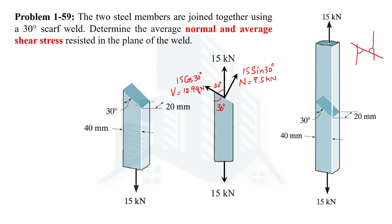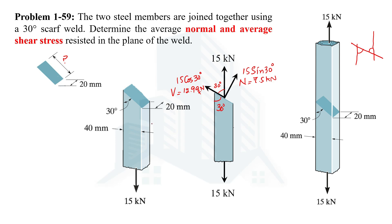Now we have both forces. To determine the stresses we need to know the area on which these forces are acting — this shaded area. The shaded area is a rectangle. One dimension is the width of the member which is 20 millimeters. We need the other dimension. We have been given the depth as 40 millimeters and the width as 40 millimeters, but the dimension we need is neither of those, so we need further calculations.